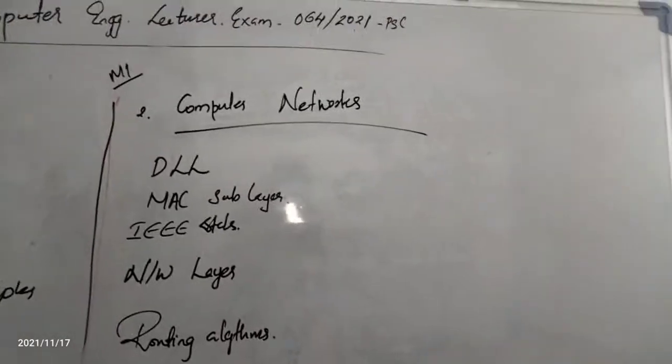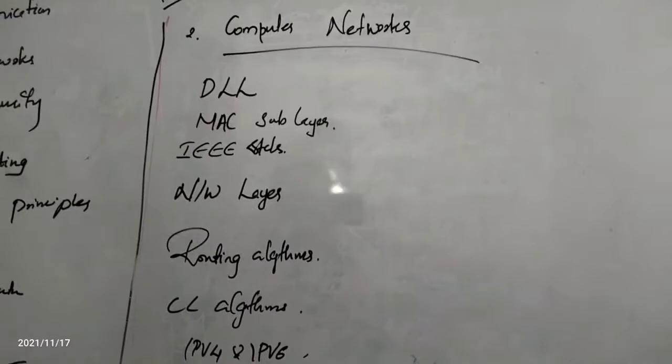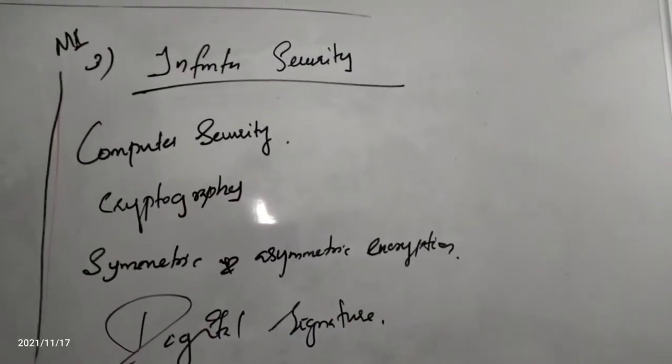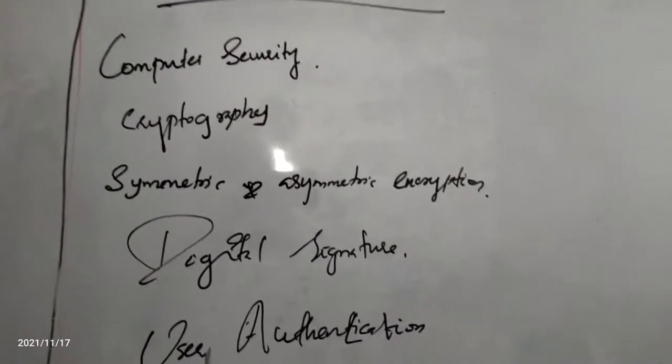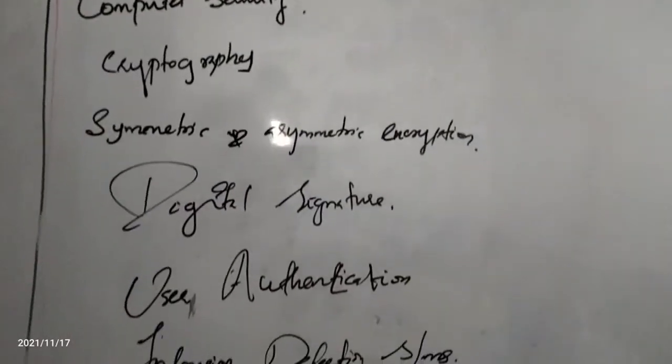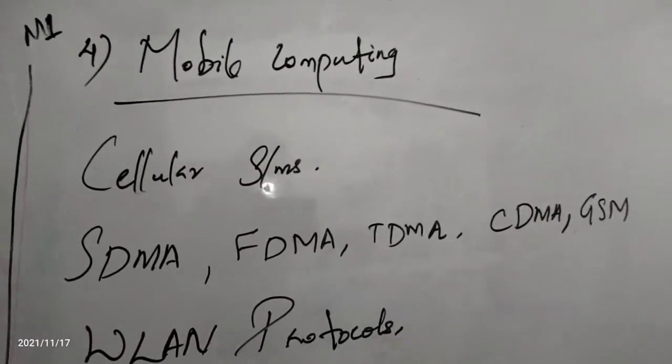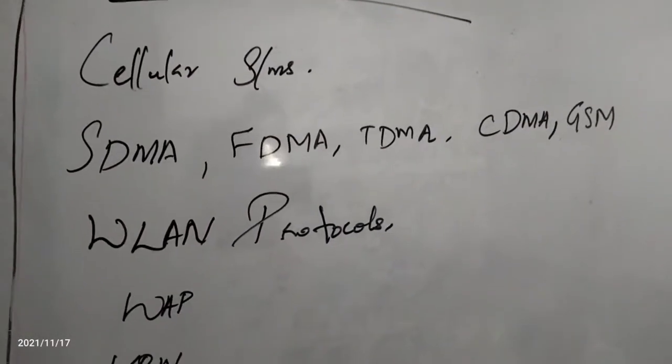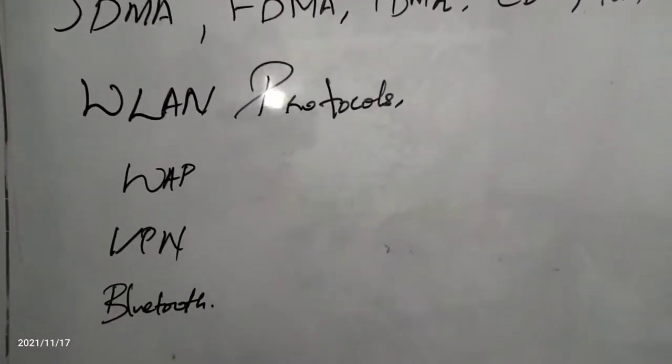Computer networks covers all network layers - data link layer, MAC layer, network layer, and transport layer - plus routing algorithms. Information security includes computer security, cryptography, symmetric and asymmetric encryption, digital signature, user authentication, and intrusion detection systems. Mobile computing covers cellular systems, SDMA, FDMA, TDMA, all the DMAs, WLAN protocols, WAP, VPN, Bluetooth, and wireless communication.